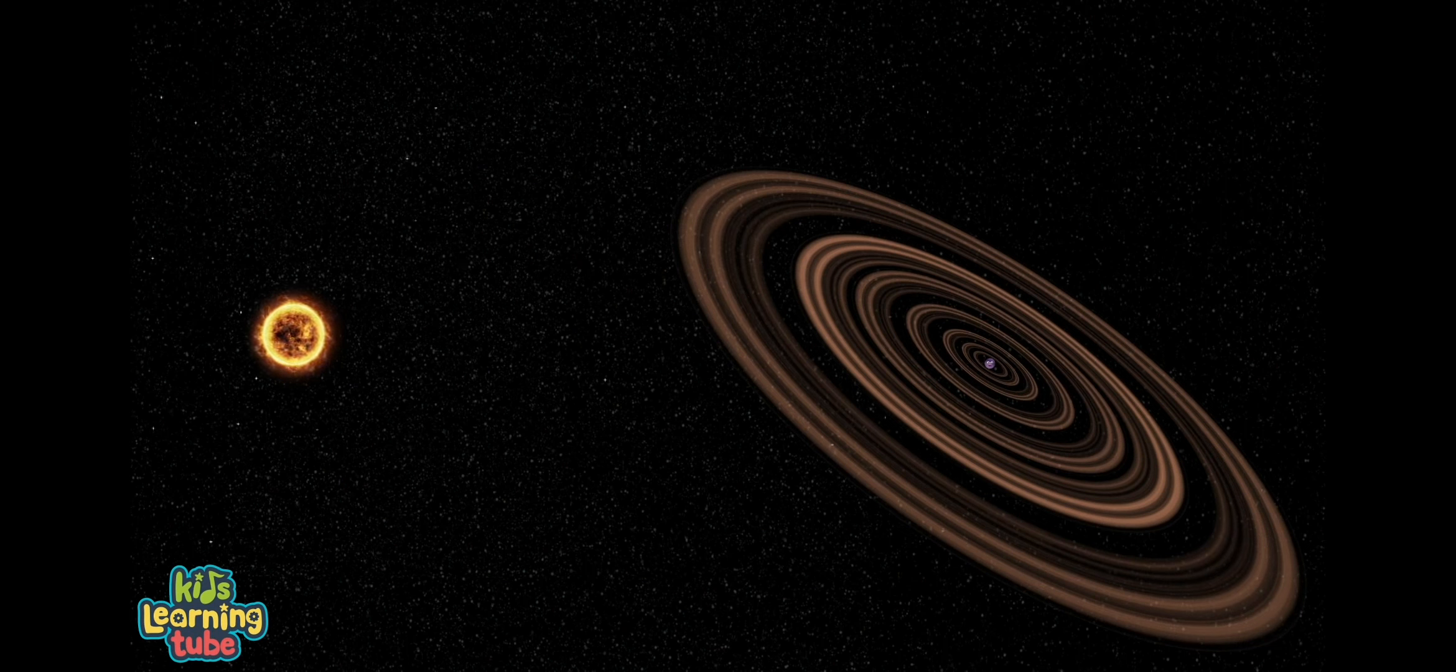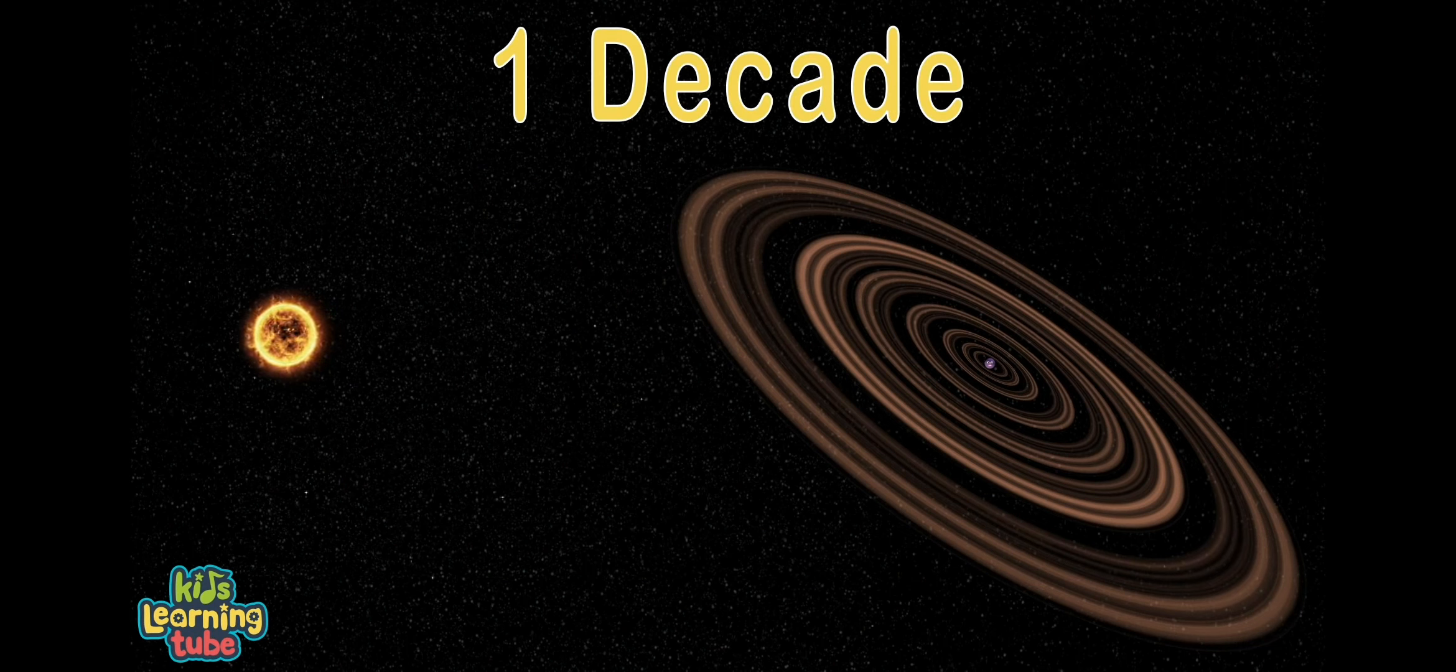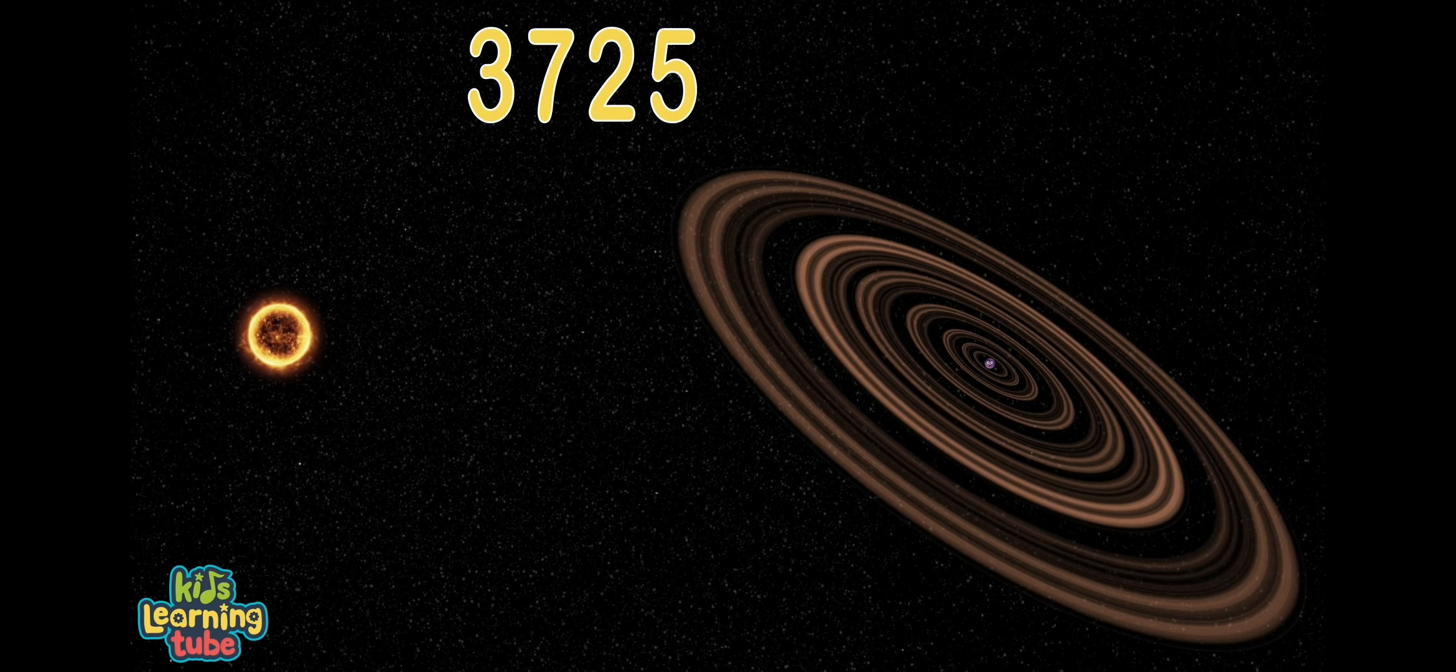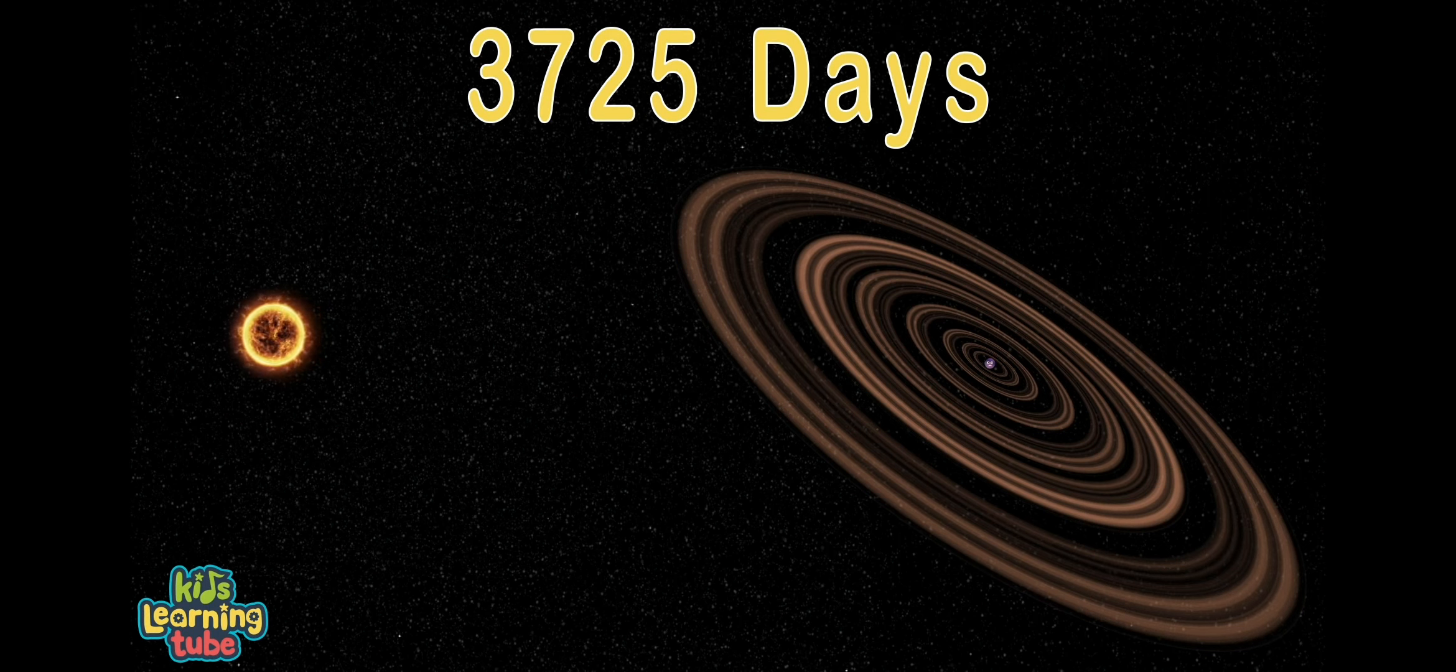When I orbit my sun, it takes about a decade, which is estimated at about 3,725 days.